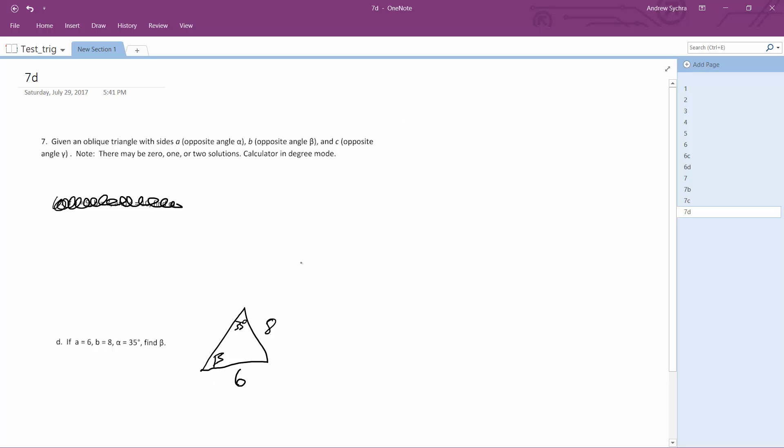So it's just going to be sine of 35 degrees over 6 equals sine of beta over 8.